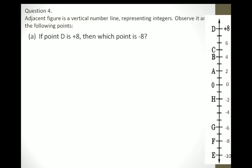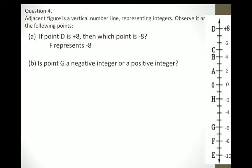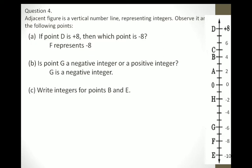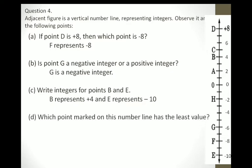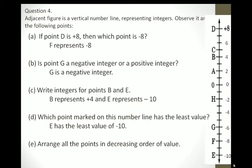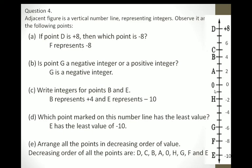If point D is positive 8, which point is negative 8? It is F — F represents negative 8. Is point G a negative or positive integer? G is at the downside, so it shows a negative integer. Point B indicates positive 4 and E indicates negative 10. The point with the least value is negative 10 because it is at the downside — negative numbers are always less than positive numbers. Arranging all points in decreasing order: D, C, B, A, O, H, G, F, E.